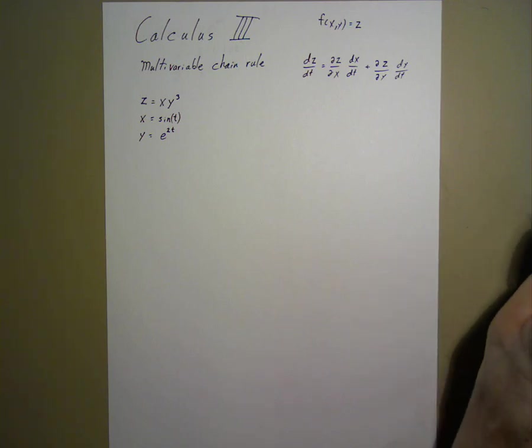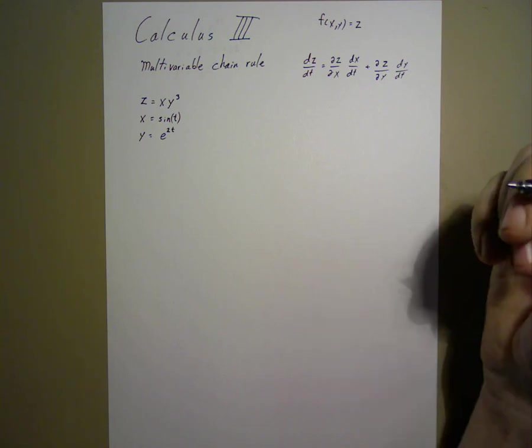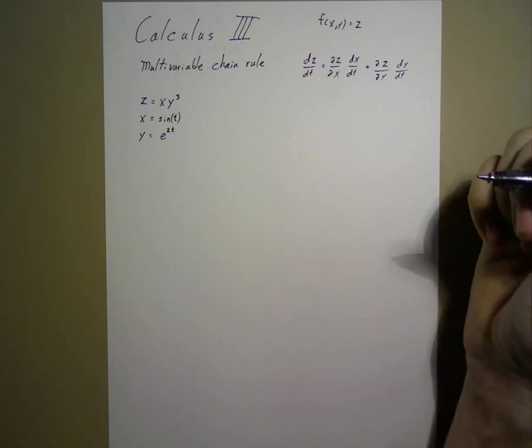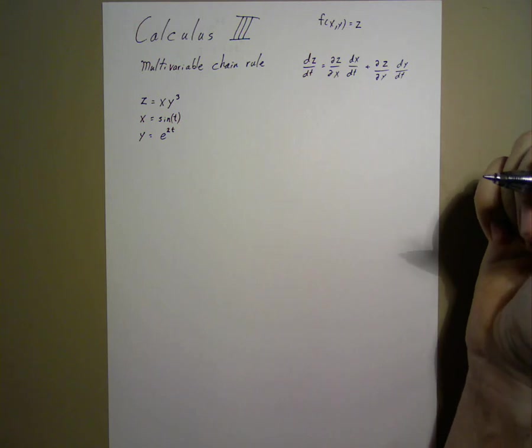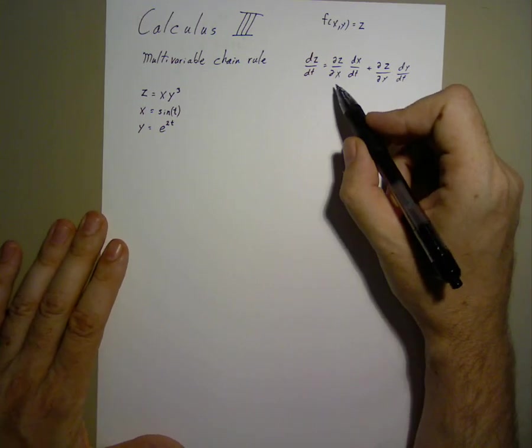Multivariable use of the chain rule is a direct extension of the single variable chain rule. However, when we do it with multivariables, we need to be careful about using partial derivatives.